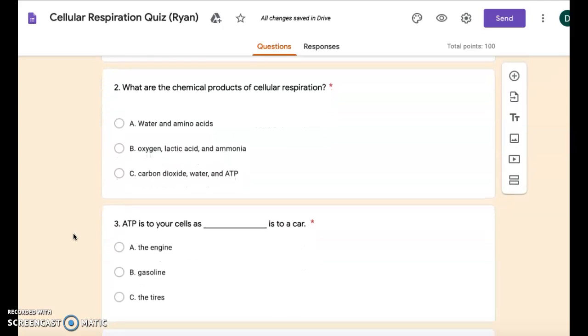Number two: What are the chemical products of cellular respiration? A: water and amino acids. B: oxygen, lactic acid, and ammonia. Or C: carbon dioxide, water, and ATP.